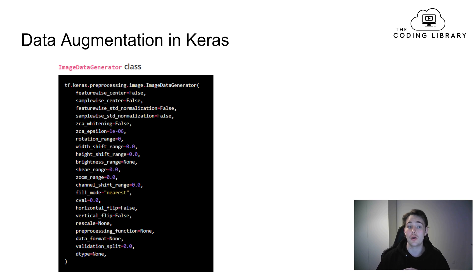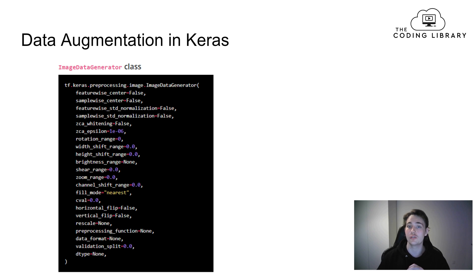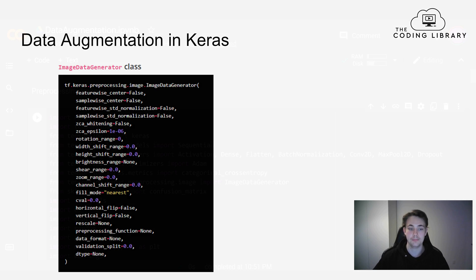It's really important that we only use data augmentation on our training set. We don't want to use data augmentation on our validation set and test set, because we want those to validate how well our model performs and to check if our model is overfitting. So we only apply data augmentation to our training set - that is really important.